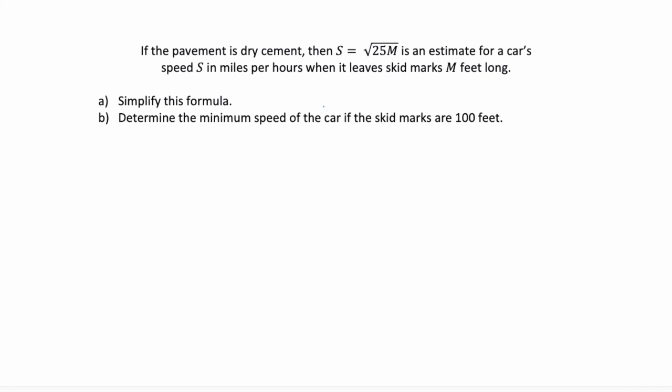If the pavement is dry cement, then s equals the square root of 25 times m is an estimate for a car's speed, s, in miles per hour when it leaves skid marks m feet long.